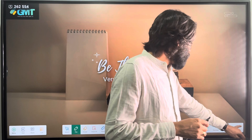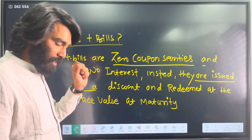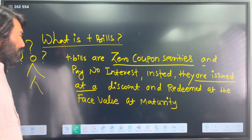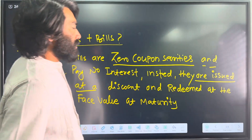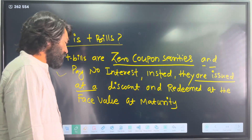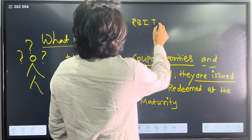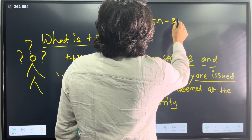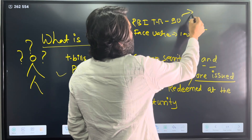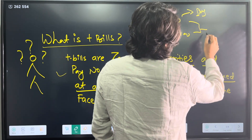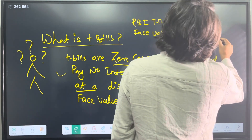T-bills, or treasury bills, are like zero coupon securities — they pay no interest. Instead, they are issued at a discount and redeemed at face value at maturity. For example, if the government or RBI issues T-bills at a price of 90 and the face value at maturity is 100, you pay 90 rupees at the time of purchase and at maturity the government pays 100 rupees back. Your profit would be 10 rupees.